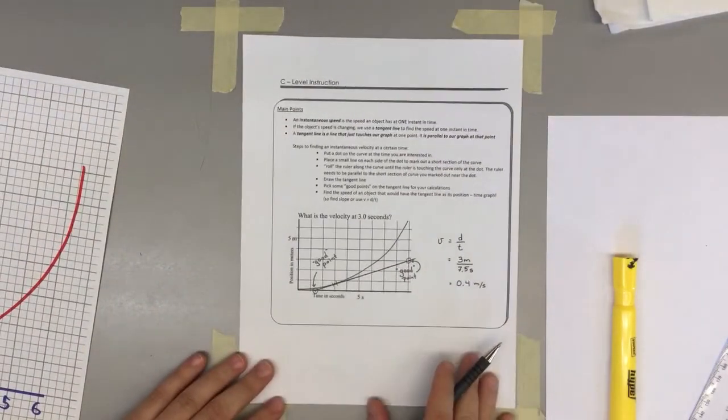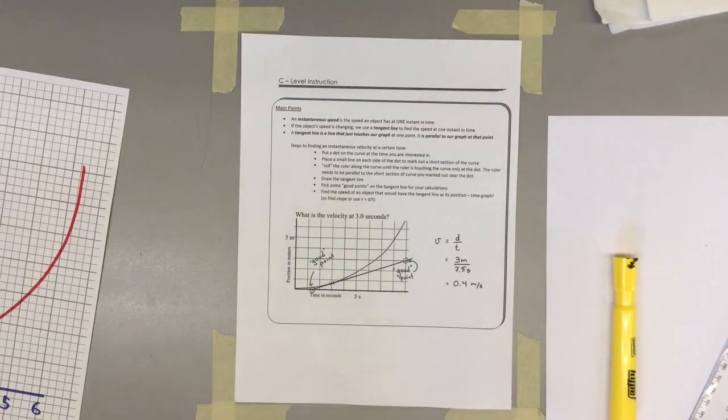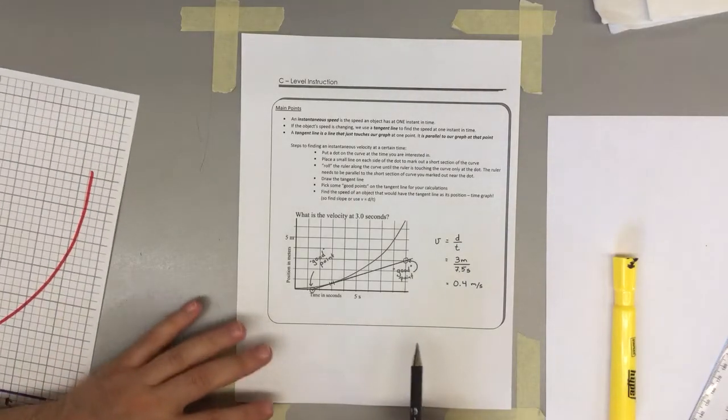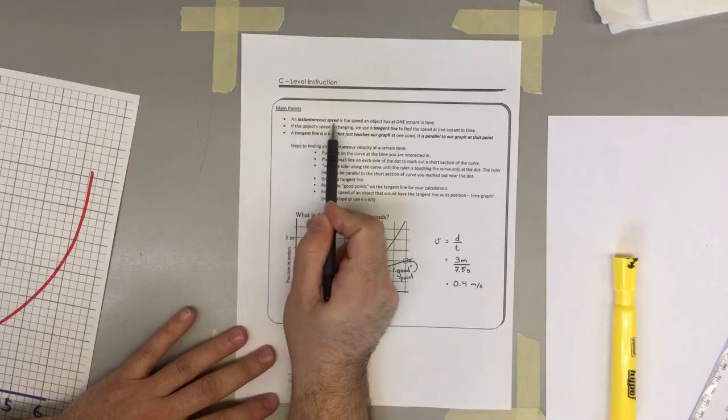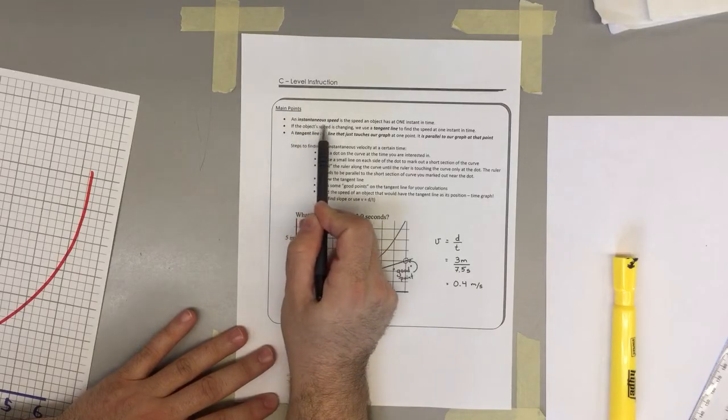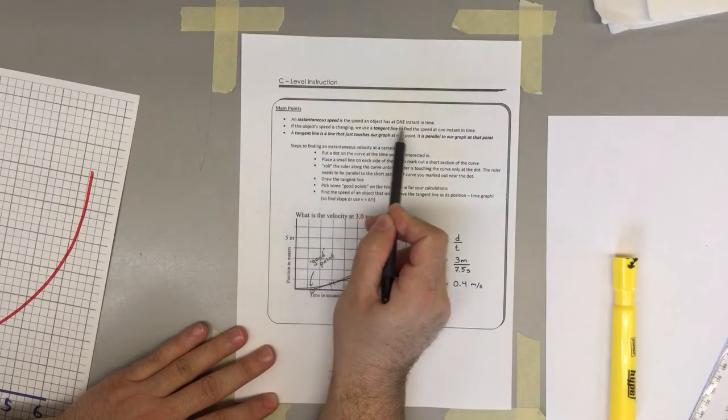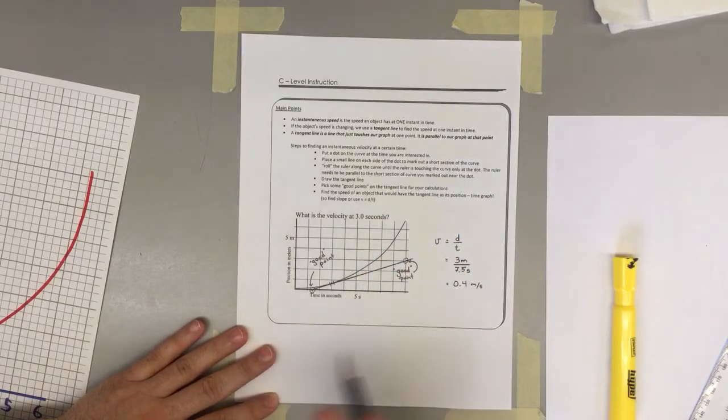So when we have a graph that has a curve and we need to find out the speed at a particular time, we calculate what we call the instantaneous speed. So an instantaneous speed is the speed an object has at one instant in time.